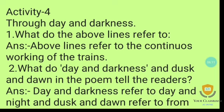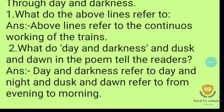Question 2: What do 'day and darkness' and 'dusk and dawn' in the poem tell the readers? 'Day and darkness' refer to day and night, and 'dusk and dawn' refer to evening to morning — meaning the trains run continuously at all times.